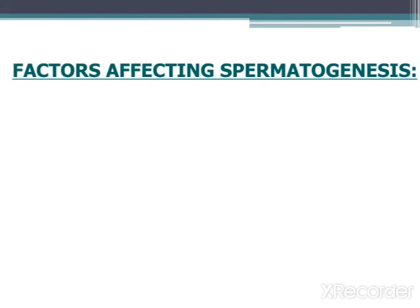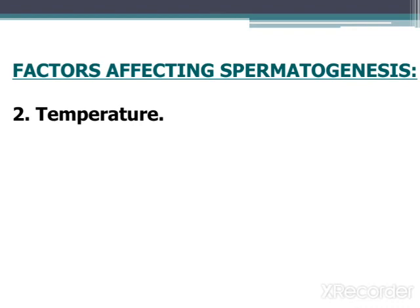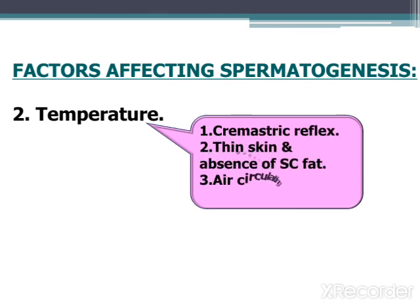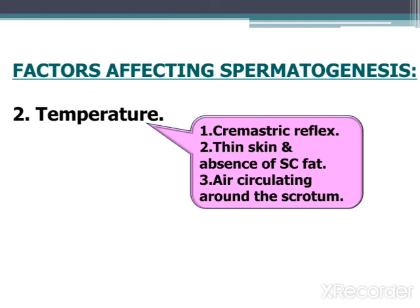Other factors besides endocrine factors that affect spermatogenesis include temperature. For spermatogenesis to occur, the temperature needs to be two to three degrees lower than body temperature. This is achieved firstly by the cremasteric reflex: during cold, the cremaster muscle contracts and pulls the testes toward the body to warm them; during heat, the cremaster muscle relaxes and drags the testes away from the body. Also, thin scrotal skin and absence of subcutaneous fat ensure that the scrotal temperature is lower than body temperature.